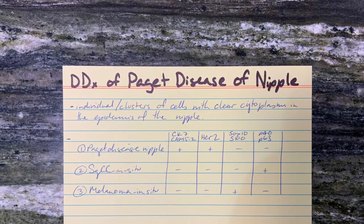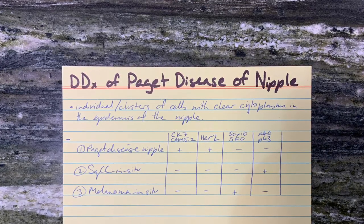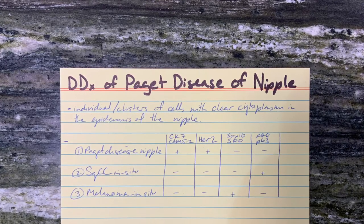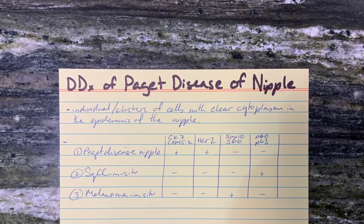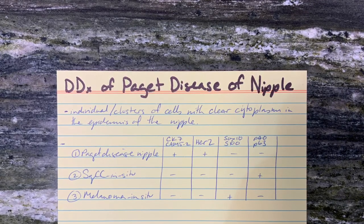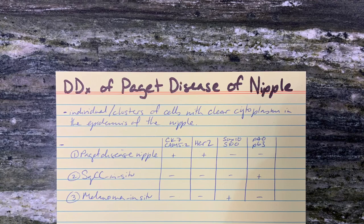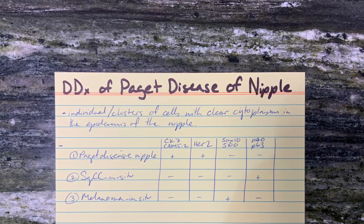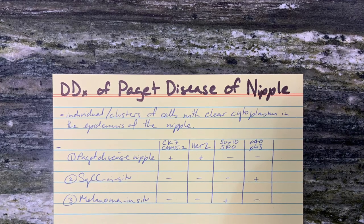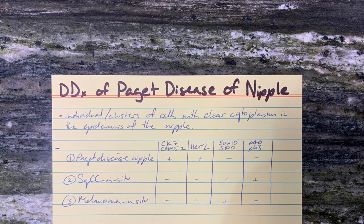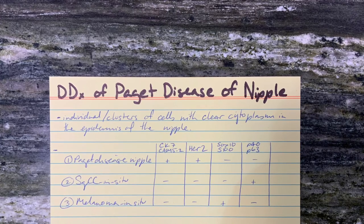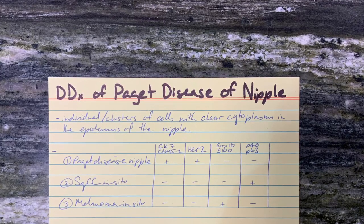Differential diagnosis of individual cells or clusters of cells with clear cytoplasm in the epidermis of the nipple includes Paget disease of the nipple, squamous cell carcinoma in situ, or melanoma in situ. Note that Paget disease of the nipple is usually associated with underlying DCIS.